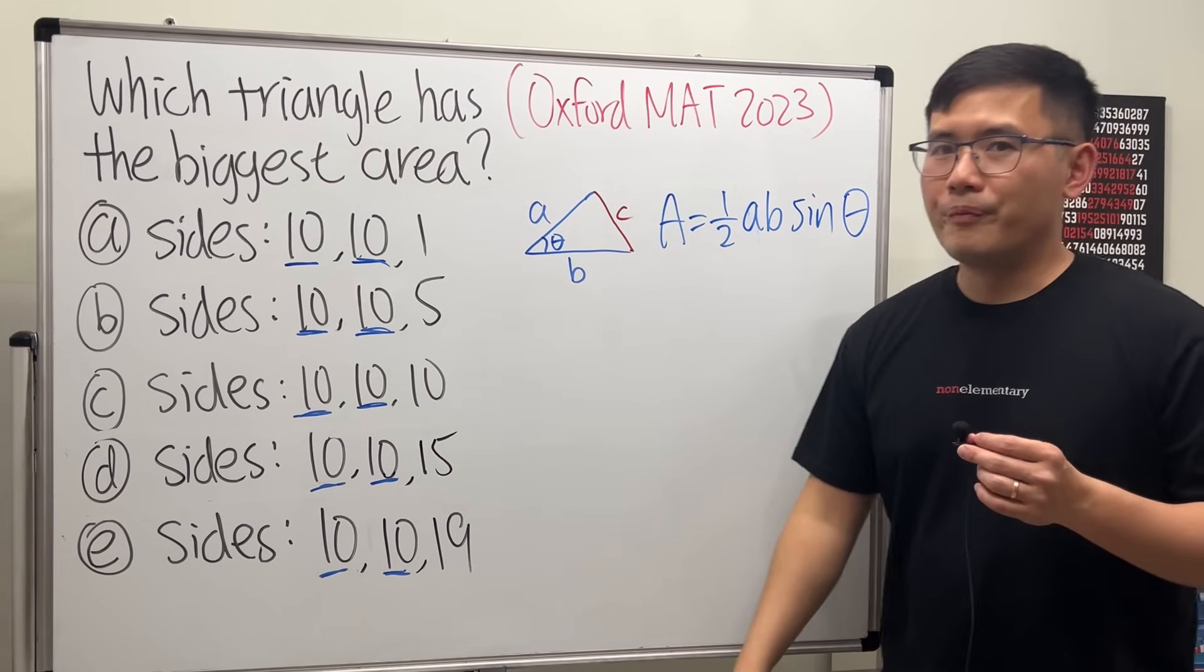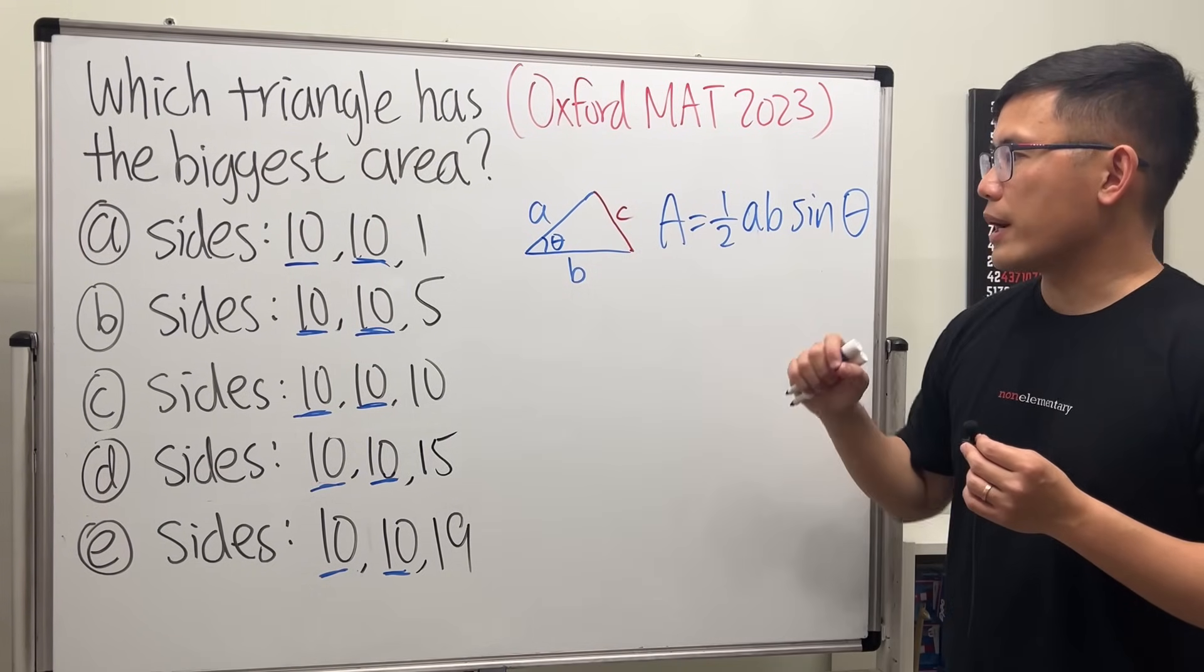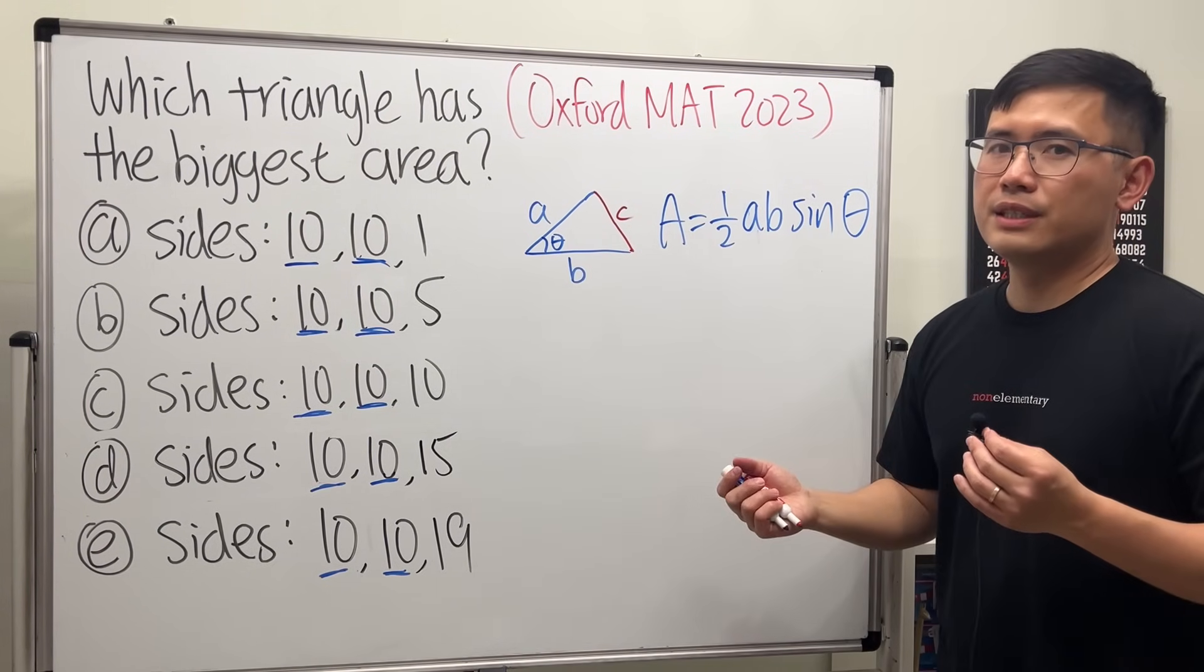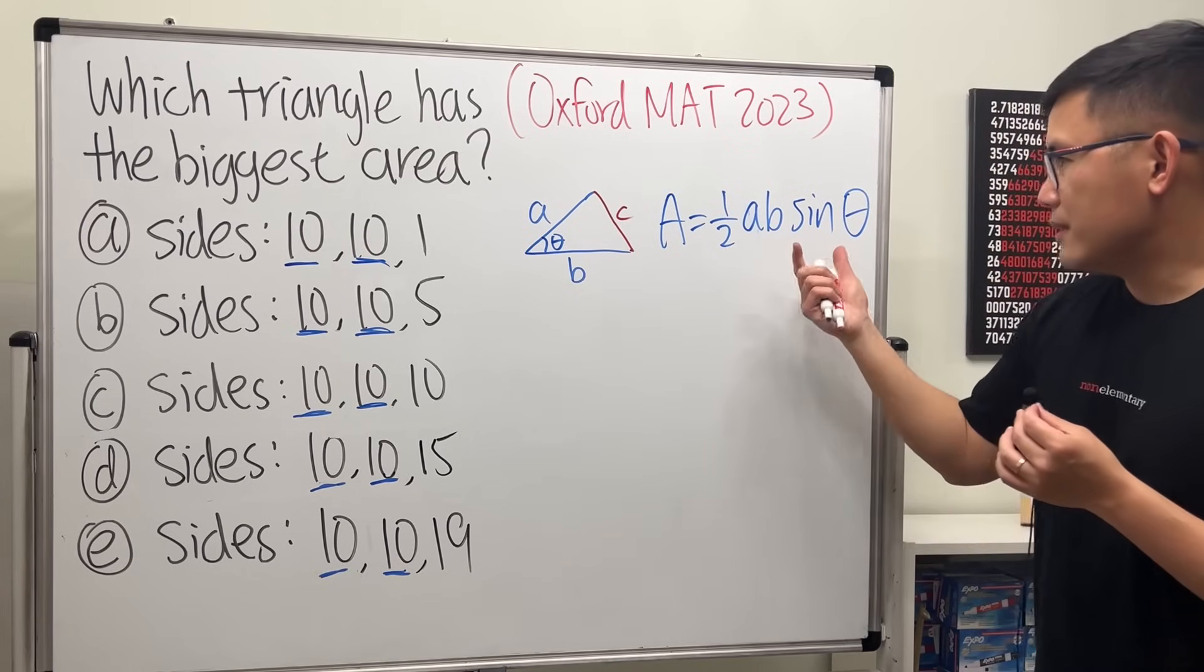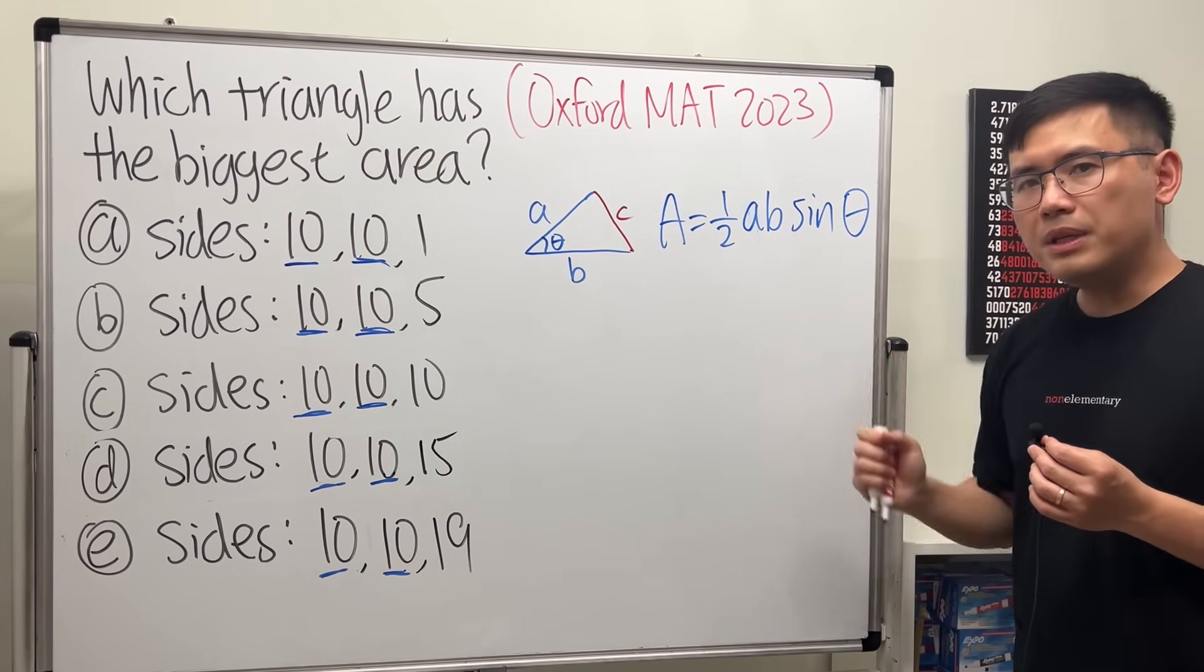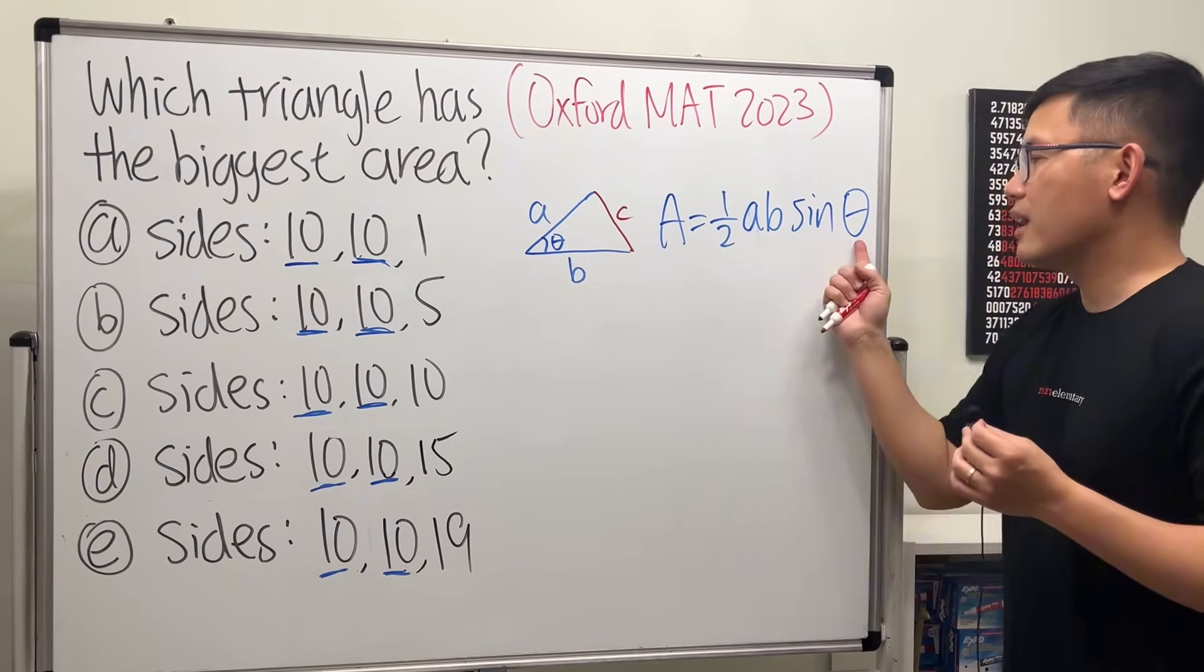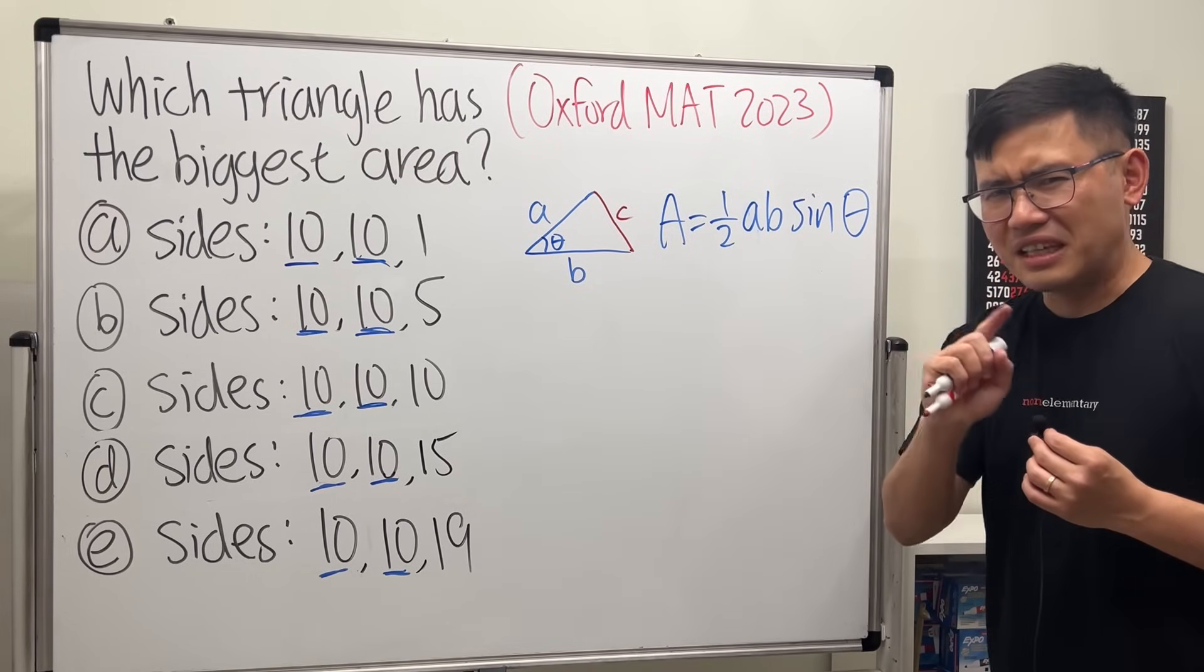Now if you look at this expression, how can such a triangle be the biggest? Well, that's the situation when we have the biggest value for sine theta, and the biggest value for sine theta is 1 under the condition that theta equals 90 degrees.